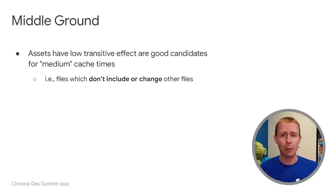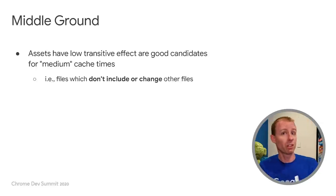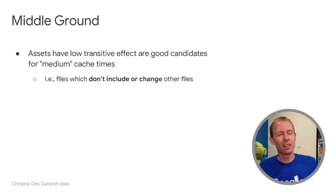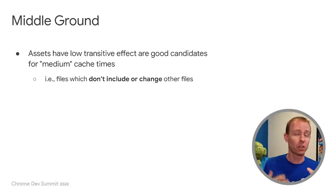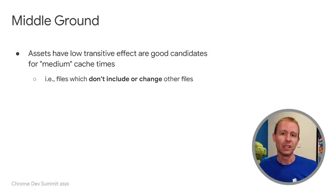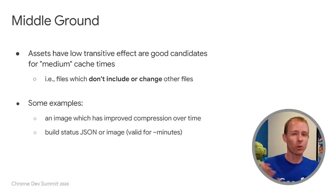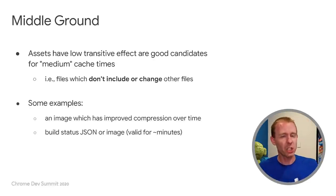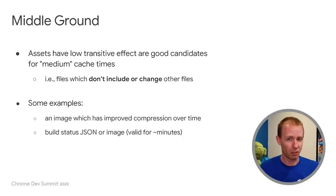Even if you aren't fully on board with the advice in this talk, a really valuable thing site authors can do is try to create more immutable assets — this will really help almost every type of web experience. As for the middle ground between never-cache and cache-forever: files with low effect on other files fit here. These are files that don't include or change other files. CSS is a bad example — it has lots of effect on your HTML. Good examples are images that are part of your content, because they don't really import other things, and if they change over time, keeping the old version around a bit longer isn't a big deal. You can cache these for a medium amount of time.